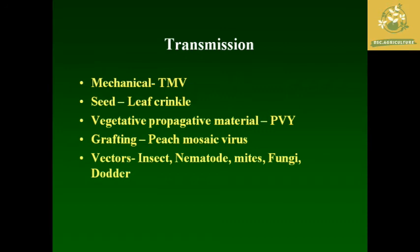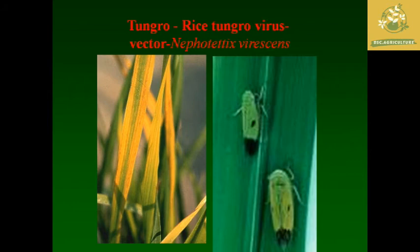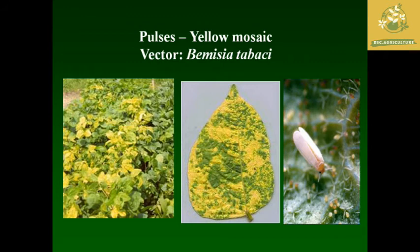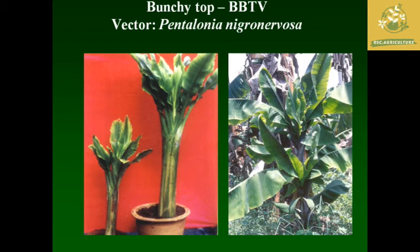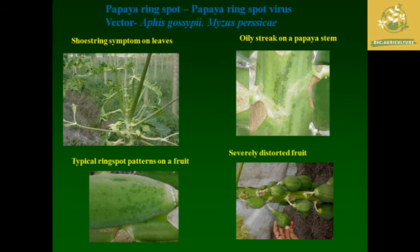In rice, the tungro virus vector is Nephotettix virescens. In pulses, yellow mosaic virus vector is Bemisia tabaci. In bhindi top virus, the vector is Phenacoccus solenopsis. In tobacco mosaic virus, the pathogen is Nicotiana virus. In papaya ring spot, the papaya ring spot virus vector is Aphis gossypii. These are images showing the described symptoms.